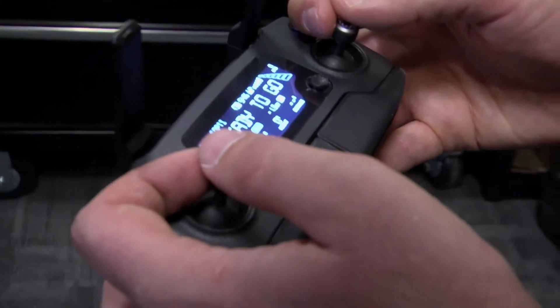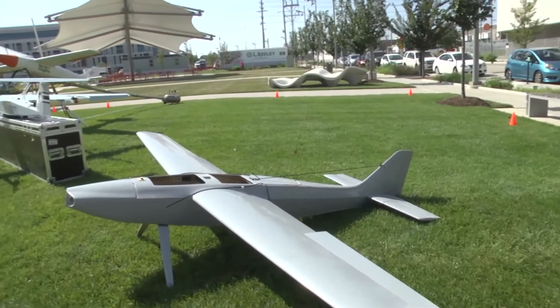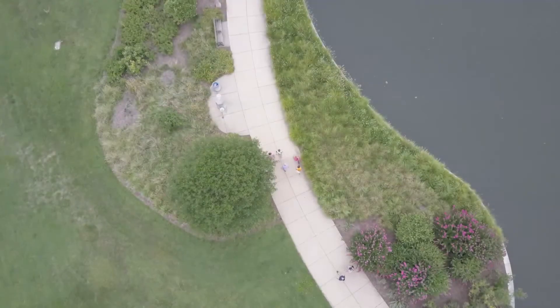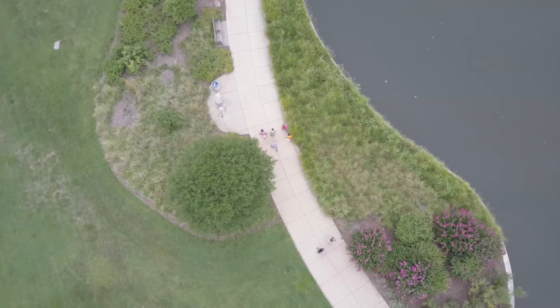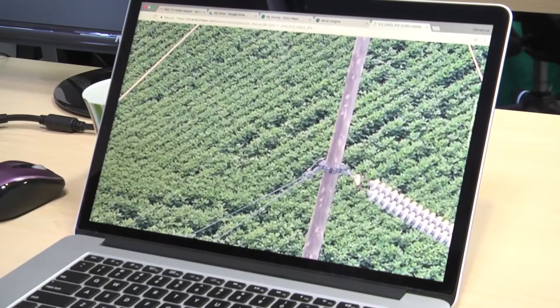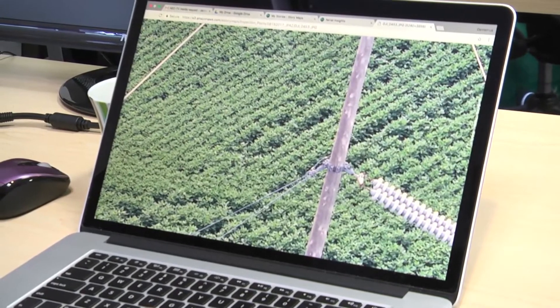Some are flown remotely by a person on the ground, while others fly autonomously with a predetermined flight path. These can fly up to 30 miles away while sending real-time images.